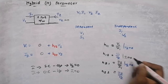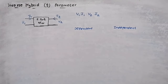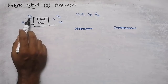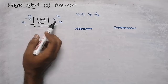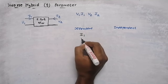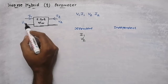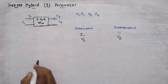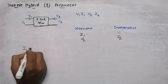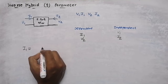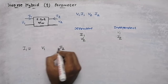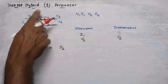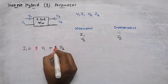The condition for h12 and h22 is that i1 should be equal to zero. In inverse hybrid parameters, we are going to find i1 and v2 using v1 and i2. The constant used in inverse hybrid parameters is g.